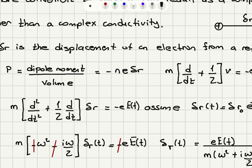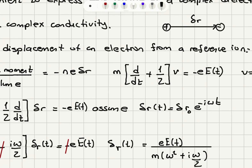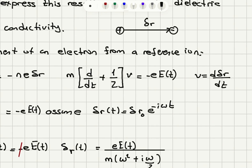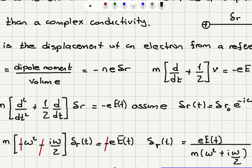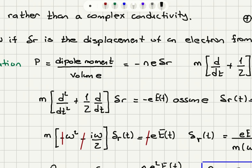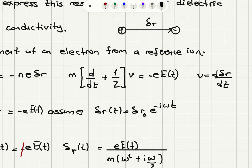We have the equation of motion: m dV/dt plus mV over tau equals minus e times the electric field. The velocity of the electron is the rate of change of displacement, d(delta R)/dt. We can rewrite this equation of motion as the second derivative of displacement plus (1 over tau) times the first derivative of displacement, multiplied by m, equals minus e times the electric field. We substitute V equal to d(delta R)/dt and assume the displacement is oscillatory: delta R equals delta R0 e to the minus i omega t.